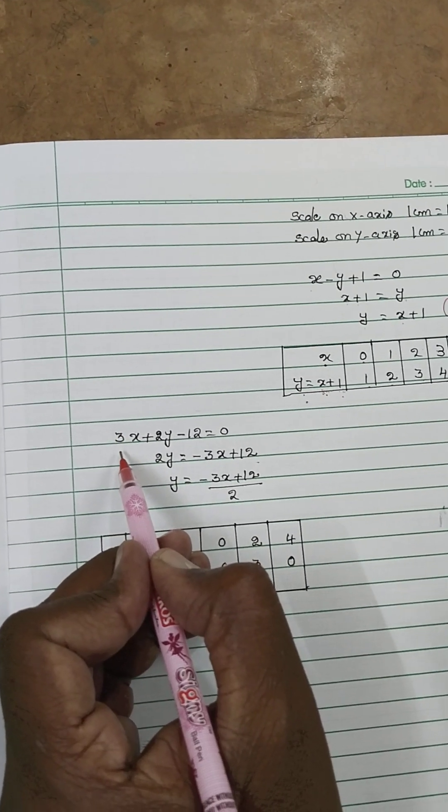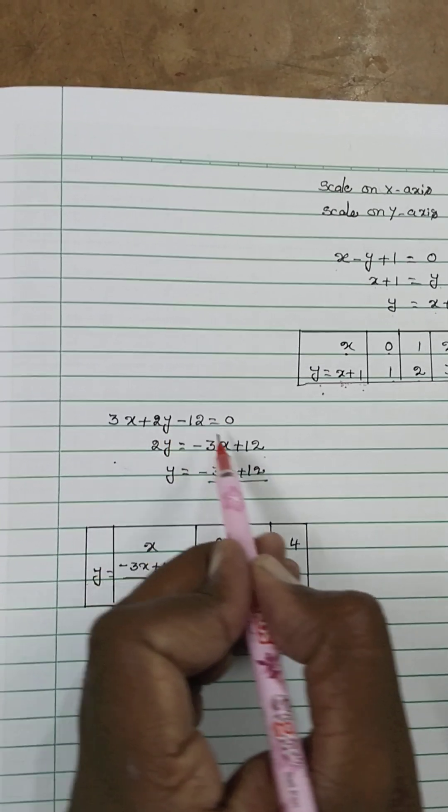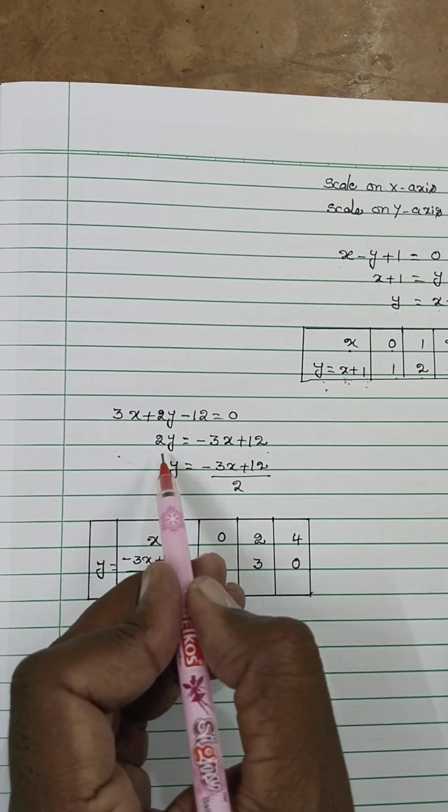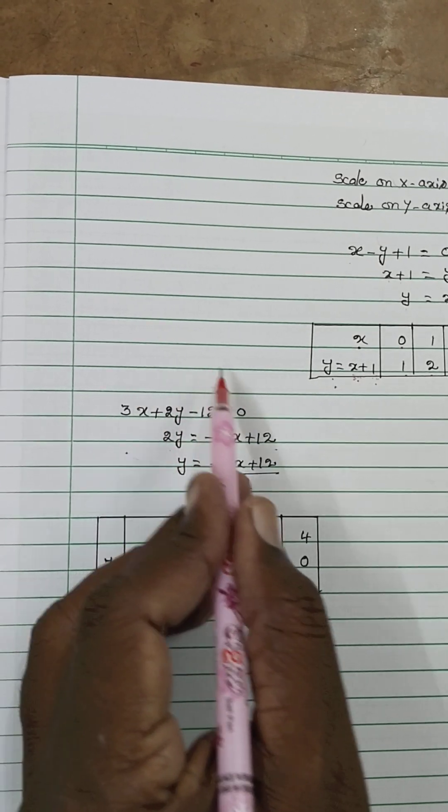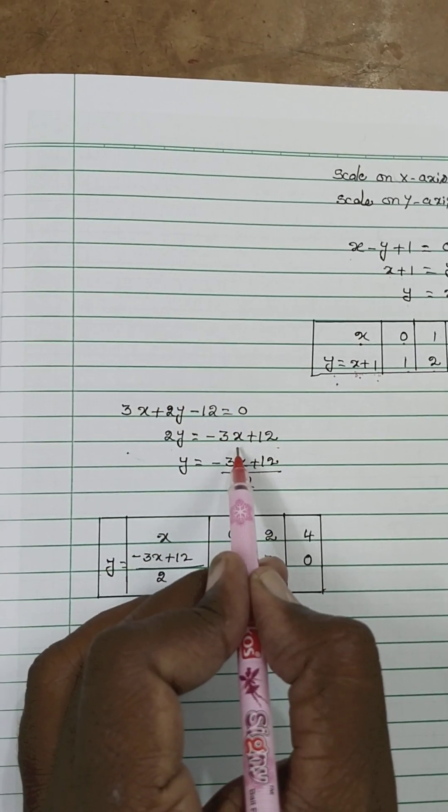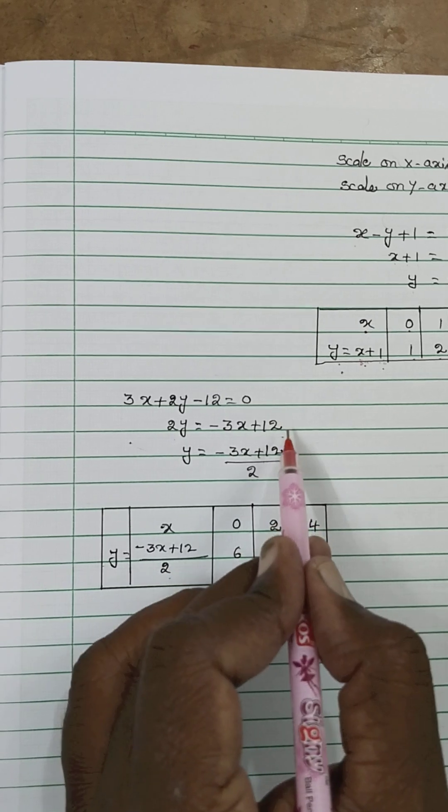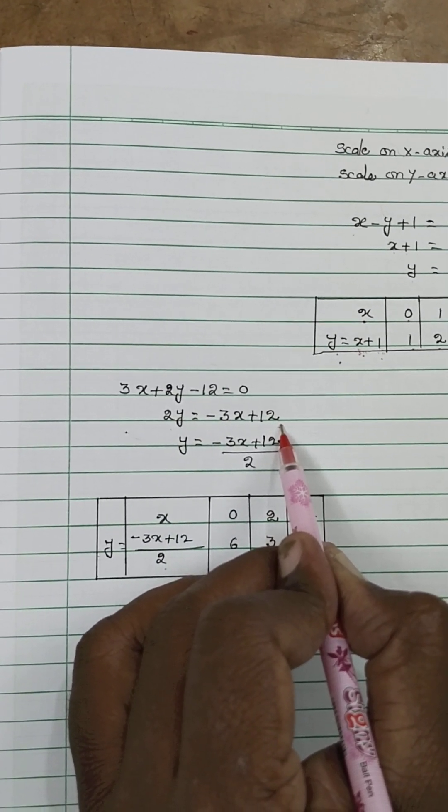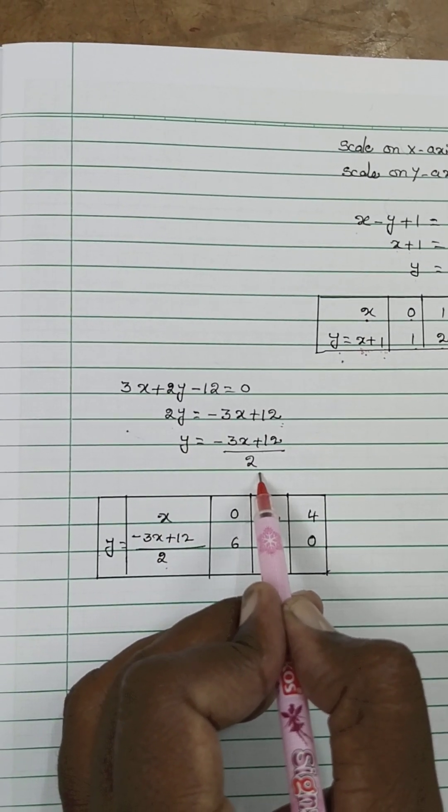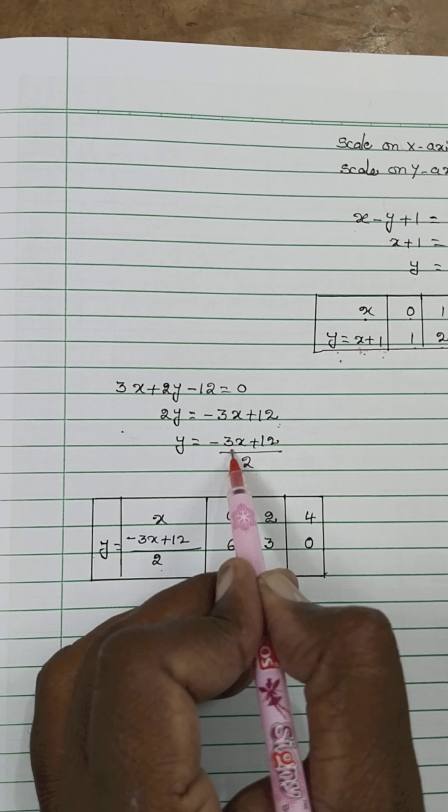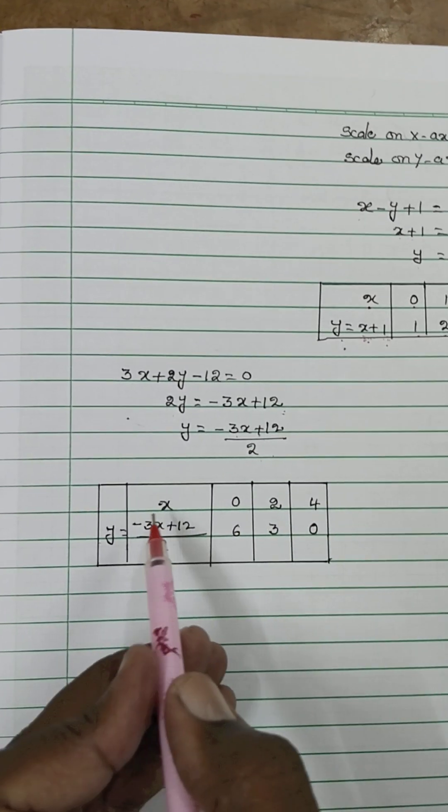Next, the second equation. 3x plus 2y minus 12 equal to 0. 2y is equal to, take the 3x to the right side, it becomes minus 3x. Minus 12 taken to the right side becomes plus 12. 2 taken to the right side with divisible. Minus 3x plus 12 by 2. Then you write the table.